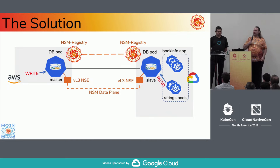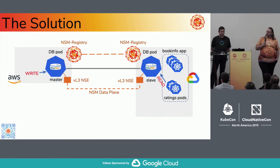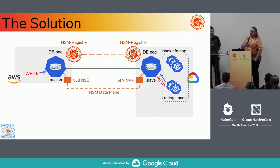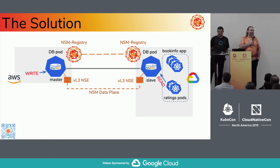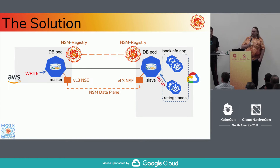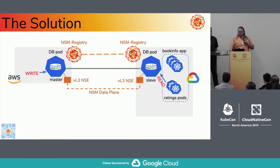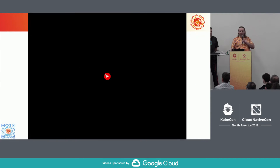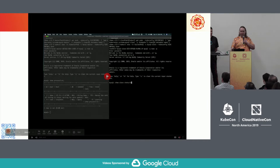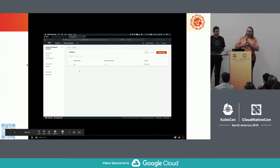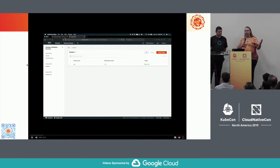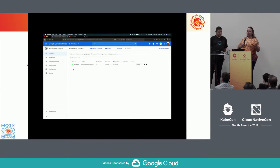Literally, your database pods come up, they both say they want to connect to the VL3 service. For example, in Google Cloud you run a BookInfo app and you'd like it to be reading from a local slave — that's going to perform better. But you might have your master off in AWS, and you may be writing data to the database in AWS. I've got a video of a demo here and we'll go through it really quickly.